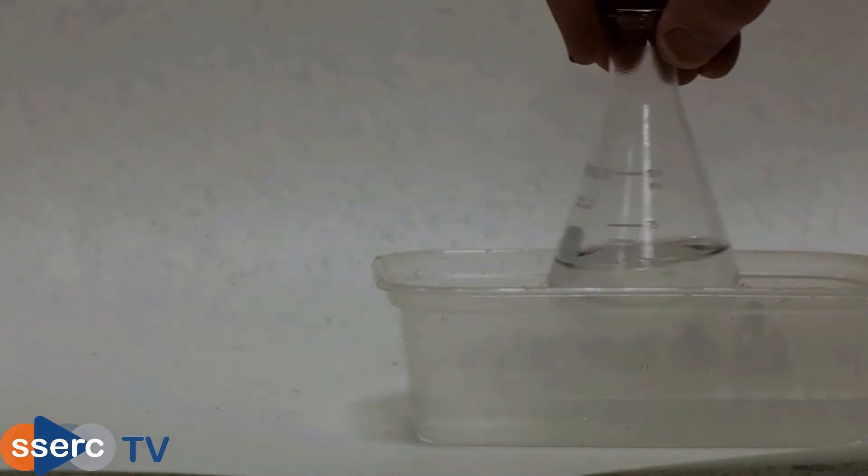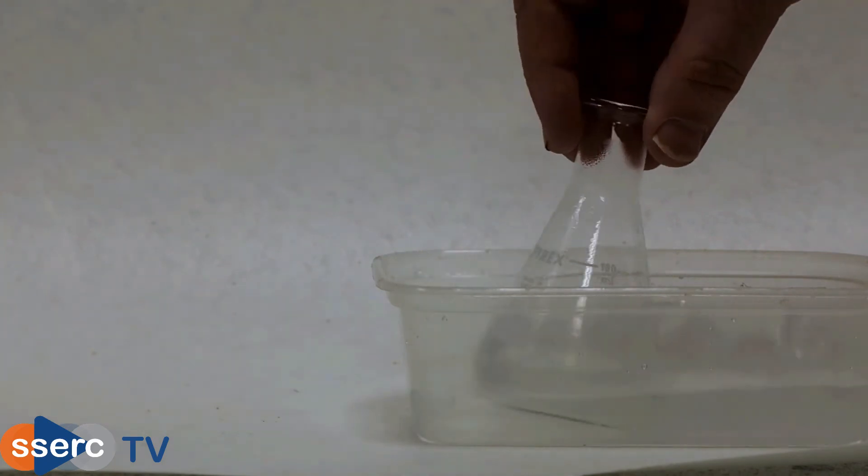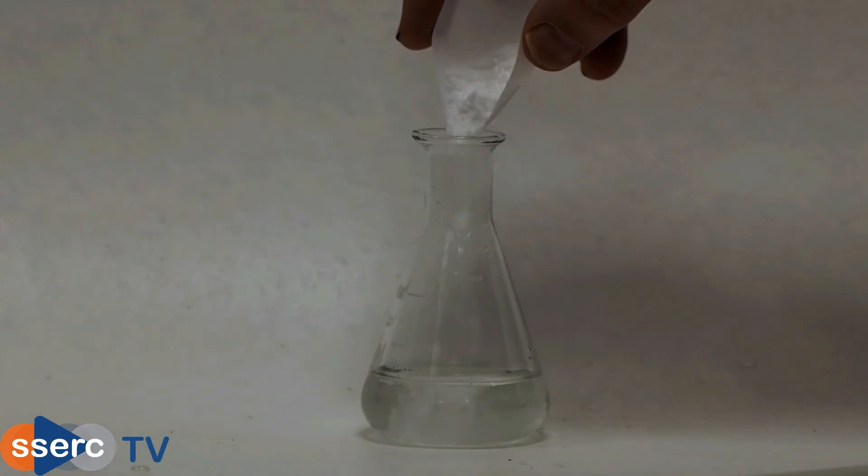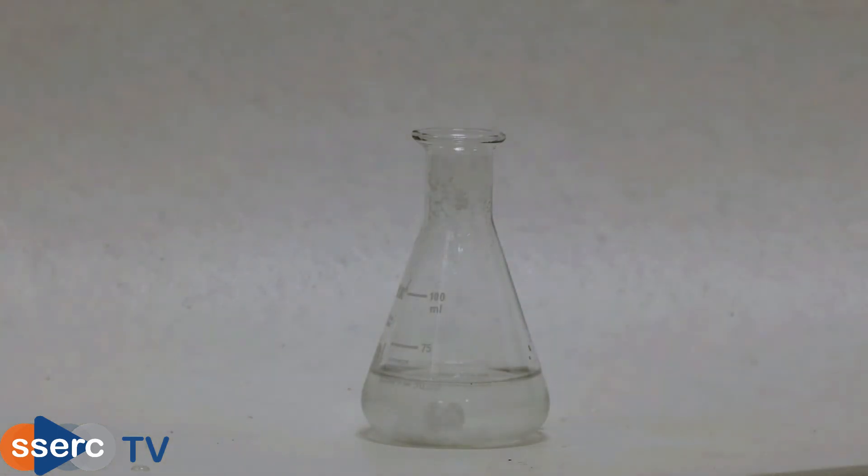Now chill the filtrate in an ice bath. You just need to take it down to about 15 or 20 degrees Celsius. It doesn't need to be ice cold. Once cold, add 2 grams of sodium carbonate and dissolve in the solution.